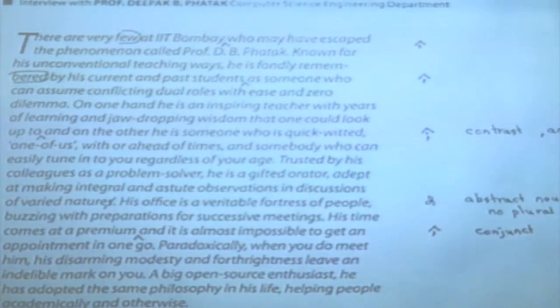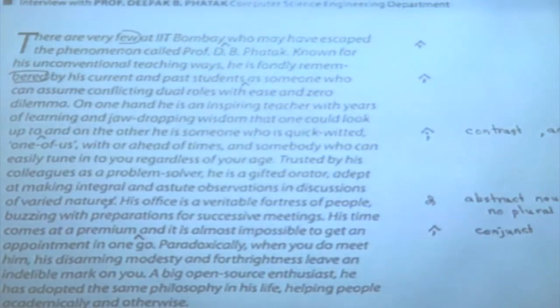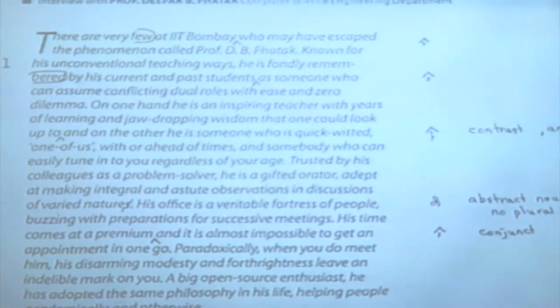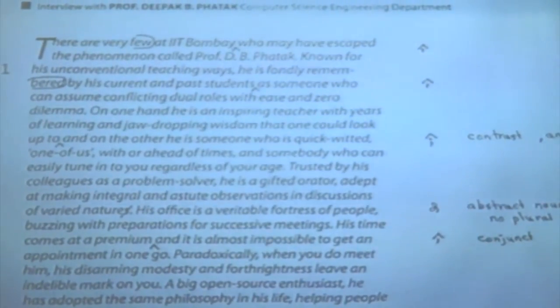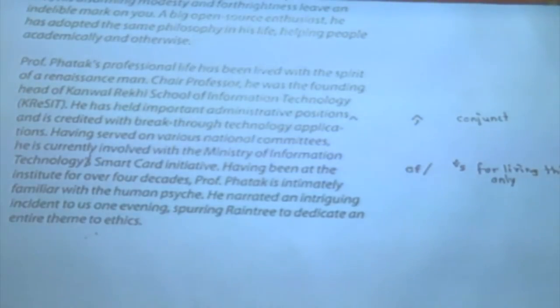There are two equally strong contrasting clauses so there should be a semicolon. Then eighth line from the bottom of that paragraph: 'of varied natures' — 'nature' is an abstract noun, and abstract nouns have no plurals. 'Varied' implies there is variation, but 'nature' is one. Then third line after that: 'comes at a premium, comma, and it is almost impossible to get' — before 'and' there should be a comma because it is a conjunct joining two clauses. When 'and' comes between two similar nouns, adjectives, or numbers, no comma is required; but if it is joining clauses longer than a word, there has to be a comma before the 'and.' Then: 'he has held important administrative positions, comma, and is credited' — because 'and is credited' is a second clause with its own verb.